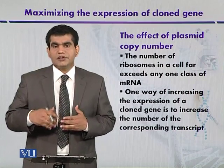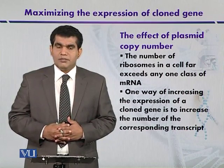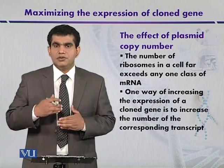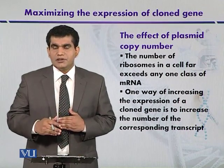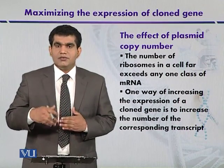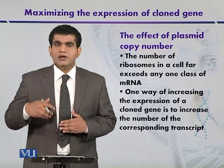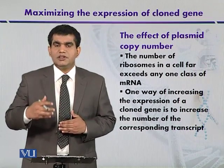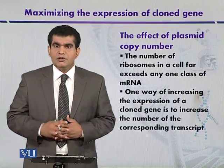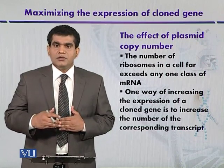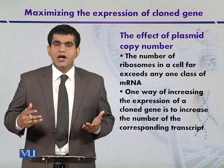The level of transcripts can be controlled by increasing the dosage of the gene — that is, by increasing the copies of the gene within the cell — so that we can get a high level of messenger RNA. This can in turn be achieved by cloning the target gene into a plasmid that has a high copy number, meaning more copies of the plasmid per cell.